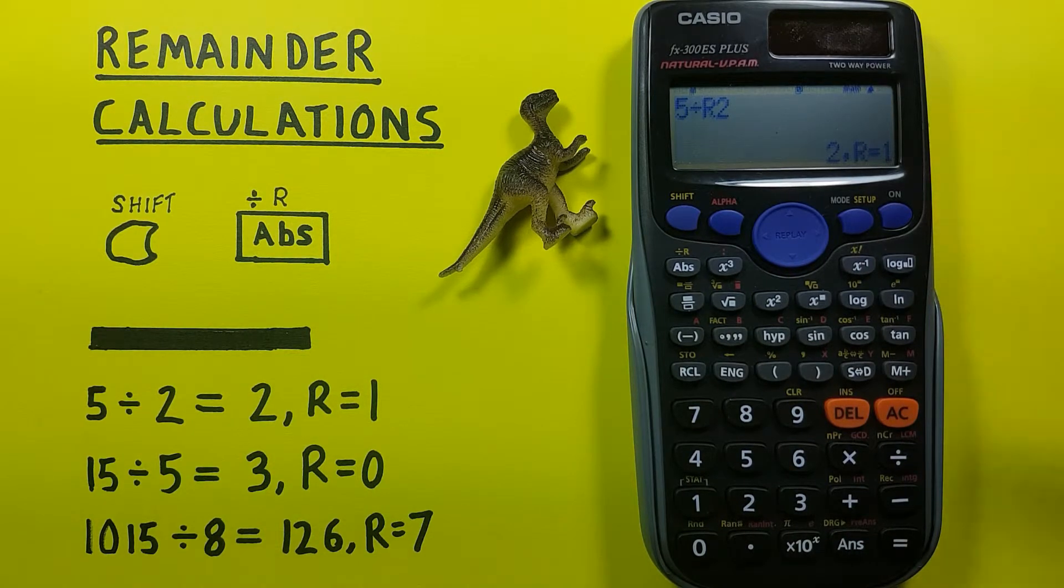You can see here we have a quotient of 2 with a remainder of 1. So we know 2 goes evenly into 5 twice with a remainder of 1.